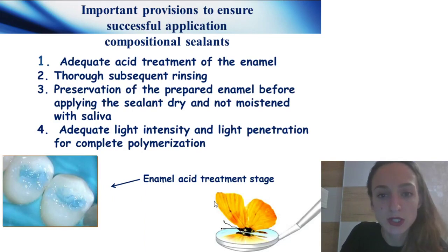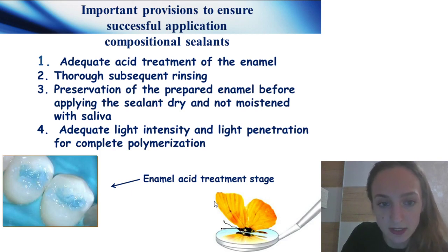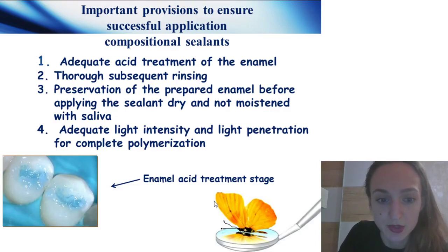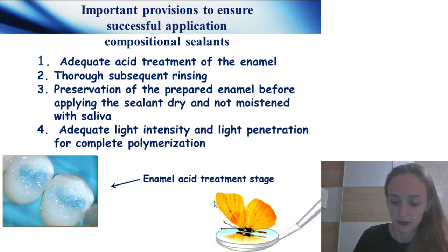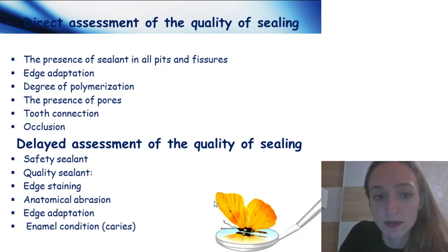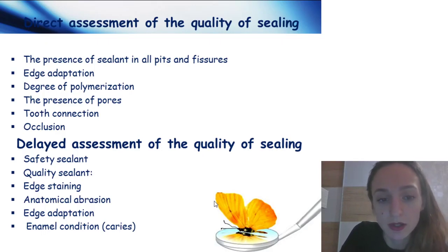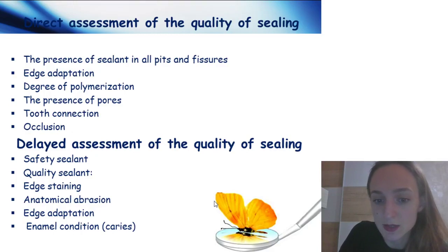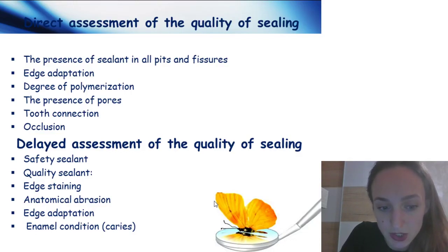Sealant safety control screening at 1, 6, 12, 18, and 24 months. Important provisions to ensure successful application of composite sealants: adequate acid treatment, thorough subsequent rinsing, preservation of the prepared enamel before applying the sealant — dry and not moist with saliva — adequate light intensity and light penetration for complete polymerization. Direct assessment of quality of sealant: presence of sealants in inner pits and fissures, edge adaptation, degree of polymerization, presence of pores, tooth correction, and occlusion. Delayed assessment: safety, sealant quality, edge staining, anatomical abrasion, edge adaptation, and enamel conditions.